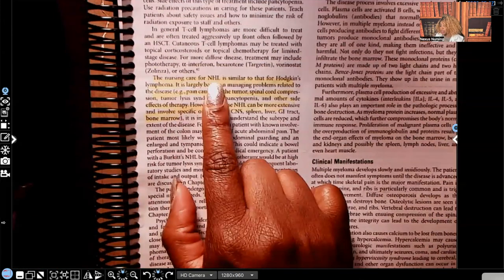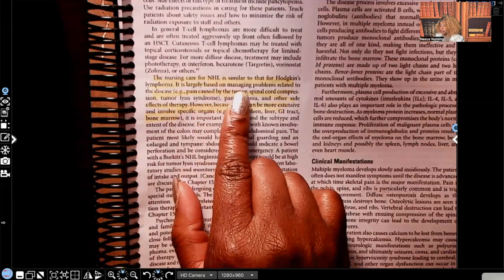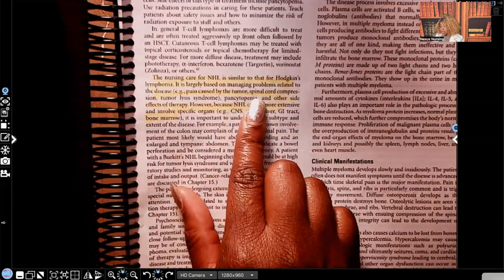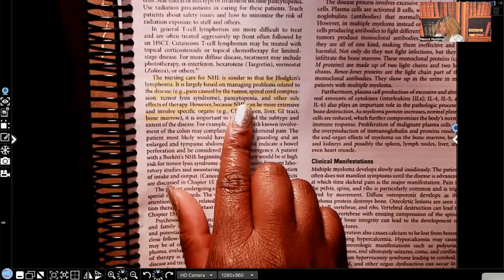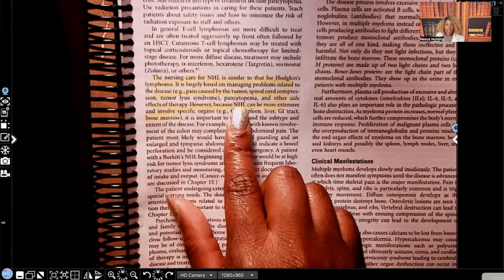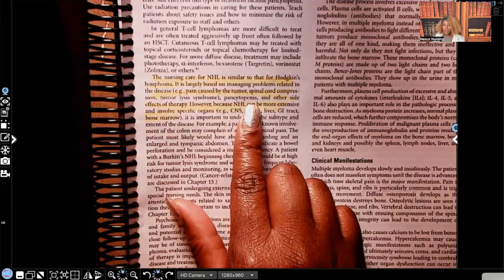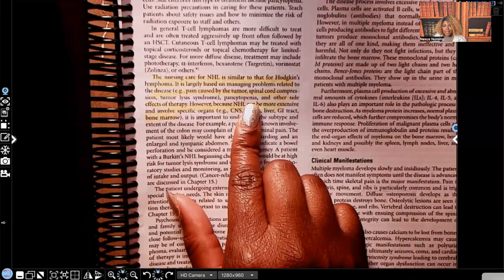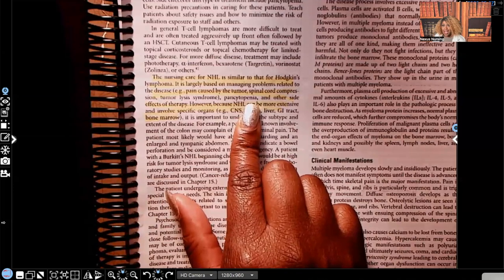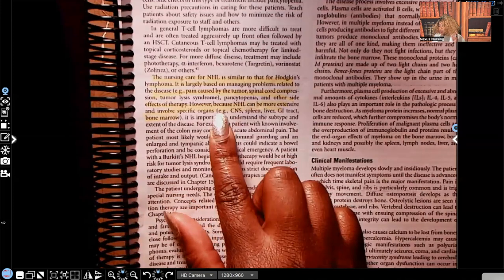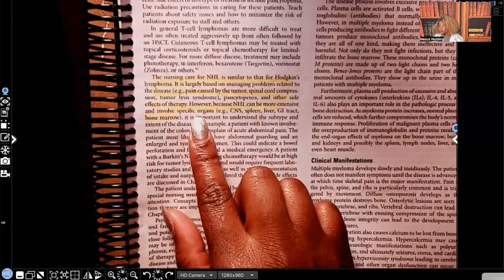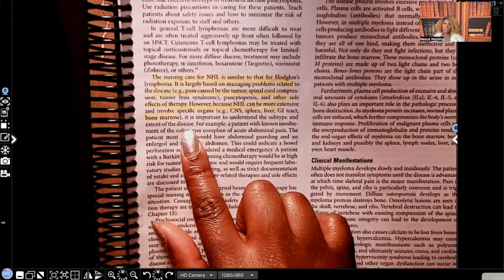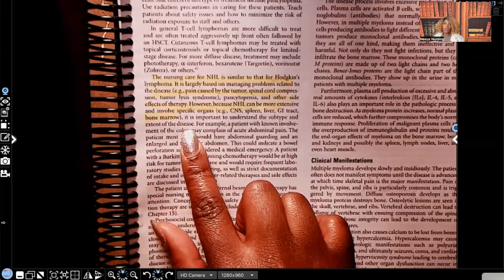The nursing care for non-Hodgkin's lymphoma is similar to that of Hodgkin's lymphoma. It's largely based on managing the problems related to the disease, such as pain that's caused by a tumor. Maybe that tumor is compressing on another organ, spinal cord compression, tumor lysis syndrome, pancytopenia, and other side effects of therapy. Pancytopenia, pan covering everything, cyto the cells, penia a little bit of. Little bit of RBCs, patient can be anemic. Little bit of platelets, patient can have bleeding disorders or hemorrhagic disorders. Little bit of WBCs, patients at high risk for infection. However, because non-Hodgkin's lymphoma can be more extensive and involve specific organs, such as the brain, the CNS, the spleen, the liver, GI tract, bone marrow, it is important to understand the subtype and the extent of the disease. And so that bone marrow is very important. And also just a full assessment on that patient.